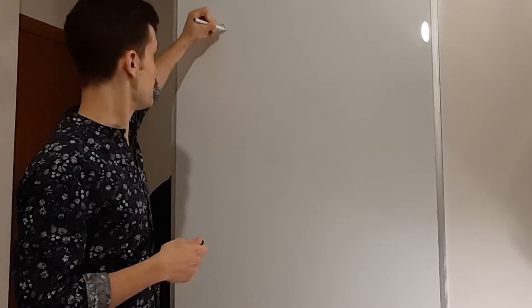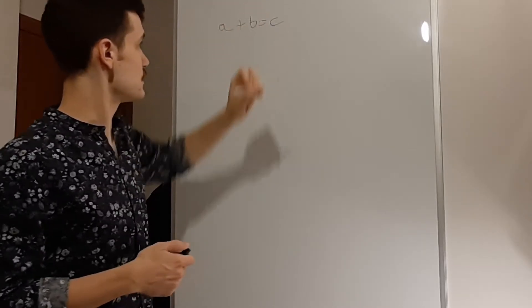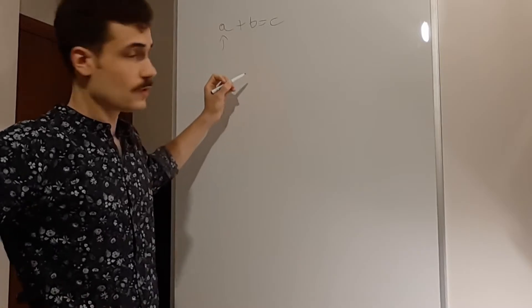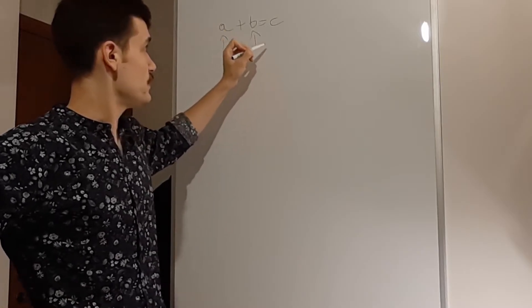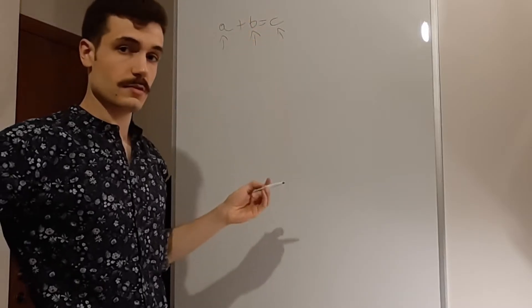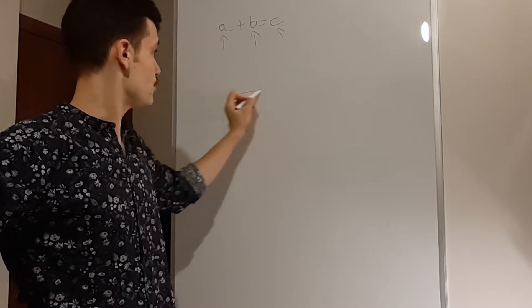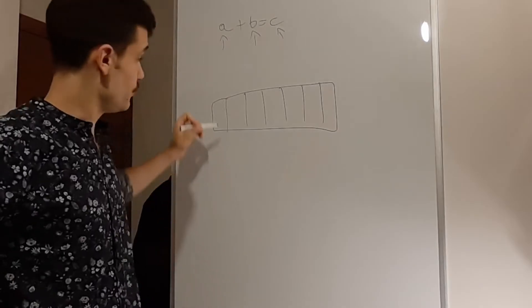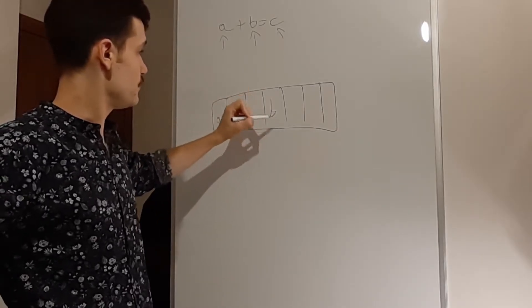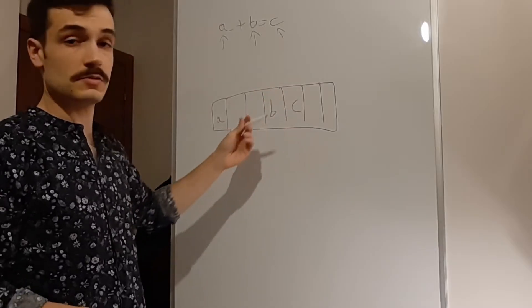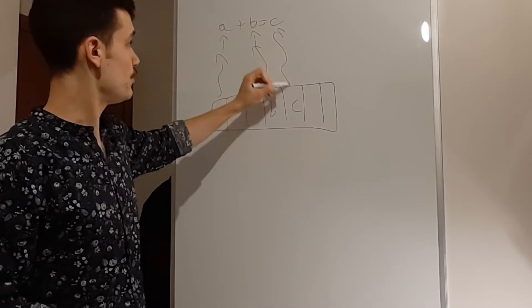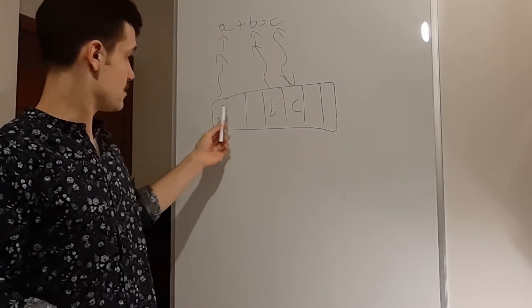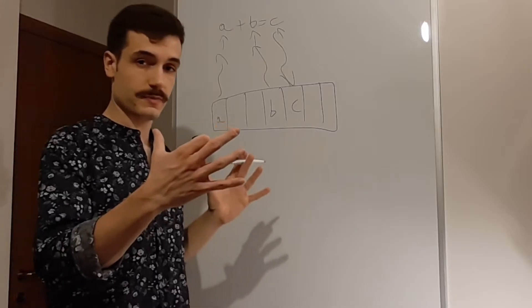When a processor needs some kind of information — for example, if you have the calculation A plus B equals C — the processor will need to know what value A is, what value B is, and will need to know where to put the value C. All this will be somewhere inside the memory of the computer. So for example, here you might have A, here B, and here C. It will take this information, and this one, and will put this information here. These are separated units inside the memory, inside the RAM.